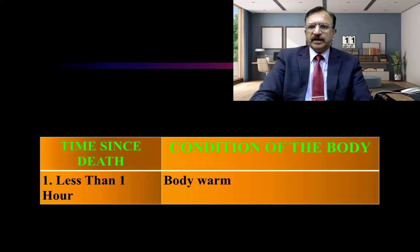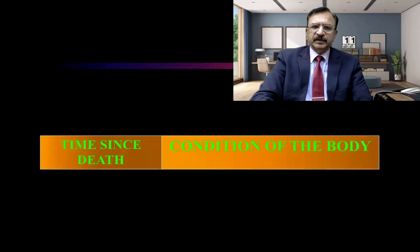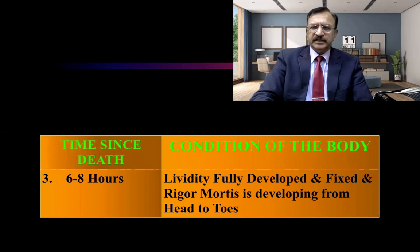In less than one hour, the body is warm. And in approximately three hours, patchy post-mortem staining starts appearing — that is, small patches of post-mortem staining on the dependent regions start appearing. In six to eight hours, this lividity has been fully developed, and it will now be in a state of fixing. Because in eight to twelve hours it will be fixed, and rigor mortis will be developing from head to toe.